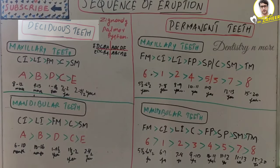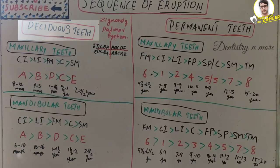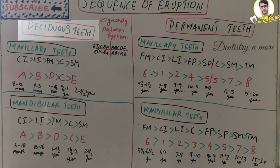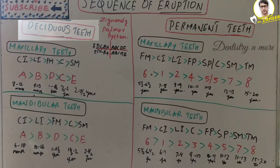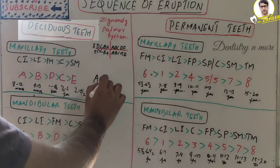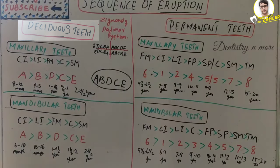The first tooth erupts in the maxilla — the central incisor — around 8 to 12 months. Then the lateral incisor around 9 to 13 months. Then comes the first molar, not the canine — the first molar erupts around 1 to 1½ years. Then comes the canine at around 1½ to 2 years, and lastly the second molar at 2 to 2½ years. So the sequence for maxillary deciduous teeth is A, B, D, C, E.